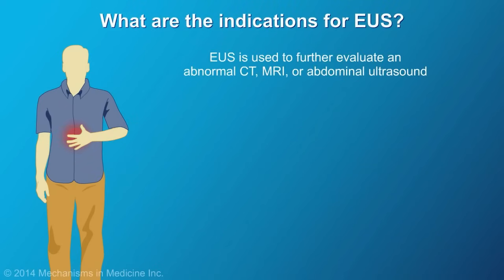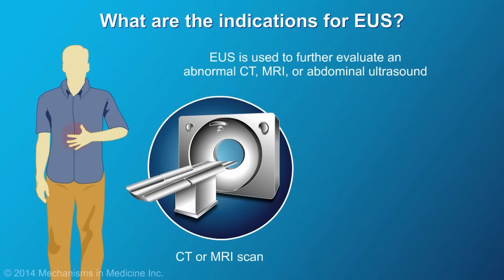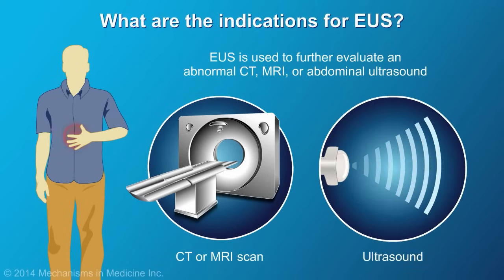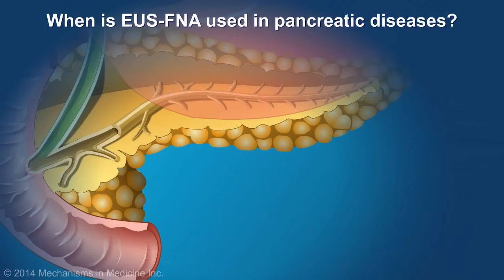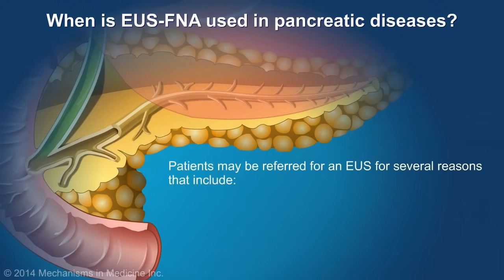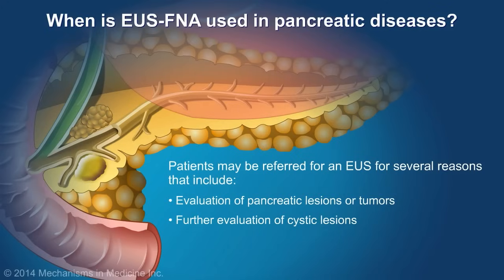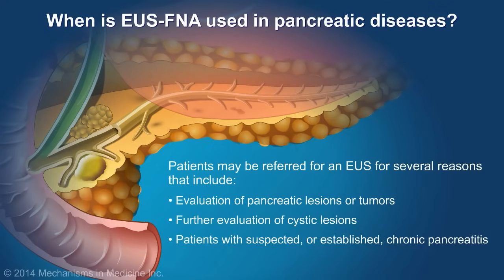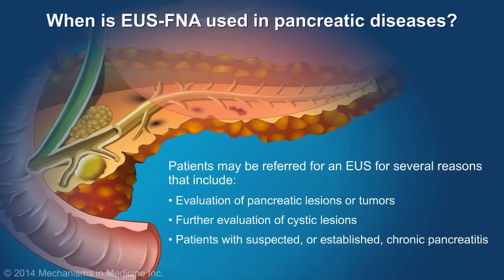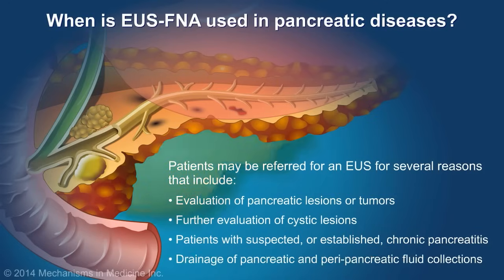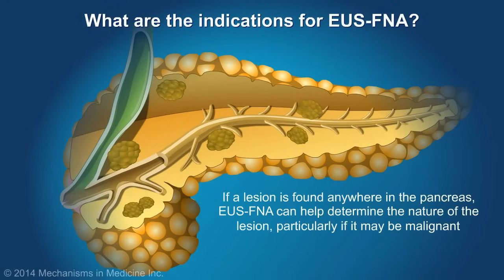Most commonly, EUS is used to further evaluate an abnormal computerized tomography or CT scan, magnetic resonance imaging or MRI scan, or abdominal ultrasound. Patients may be referred for an EUS for several reasons that include evaluation of pancreatic lesions or tumors, further evaluation of cystic lesions of the pancreas, and in patients with suspected or established chronic pancreatitis. EUS is also used to drain symptomatic pancreatic and peripancreatic fluid collections. If a lesion is found anywhere in the pancreas, EUS-FNA can help determine the nature of the lesion, particularly if it may be malignant.